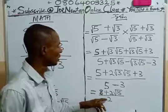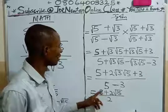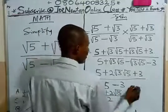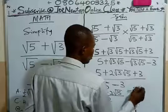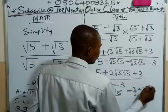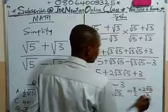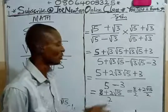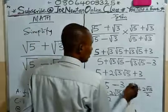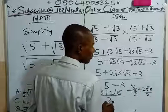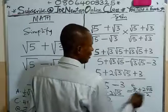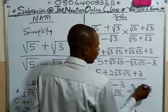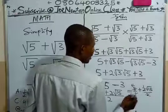Do not just say 8 + 2 is 10. What you are going to do is this: This simply means 8 over 2 plus 2√15 over 2. That's the implication of this. Because the LCM is 2, the denominator is 2. This divides to give 4, and this side gives you 1. So invariably, what we have is 4 + 1 times √15, which is √15.